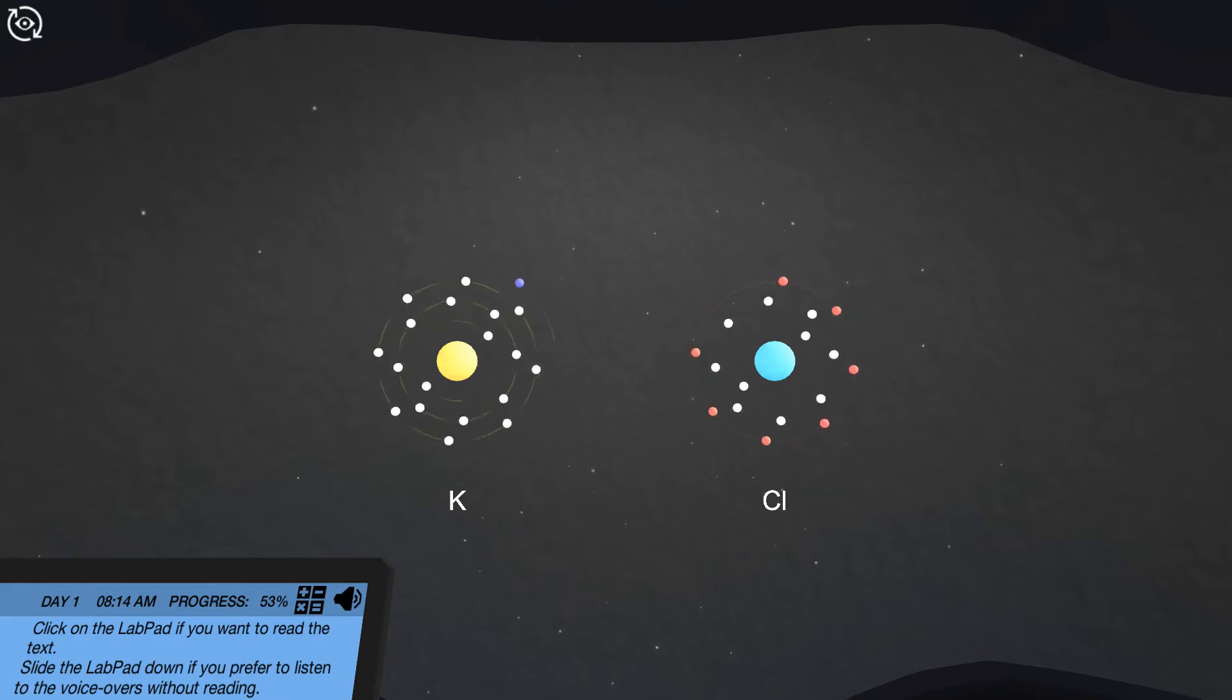Chlorine has 17 electrons, of which 7 are in the valence shell. Chlorine has to take up 1 additional electron to have the same stable status as argon. If both atoms are close to each other, an electron transfer occurs.